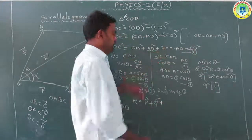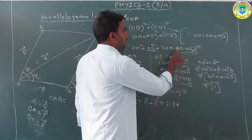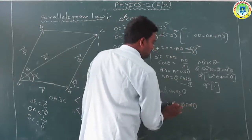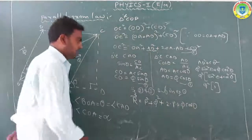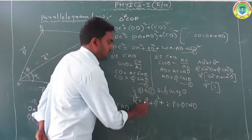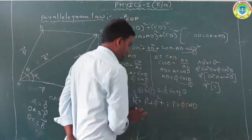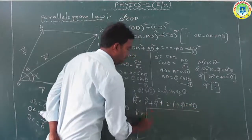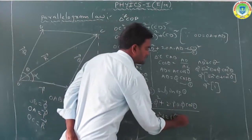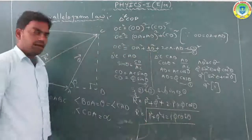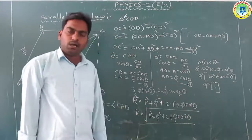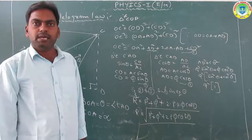Substituting into equation 1: OC² = OA² + AD² + CD² + 2·OA·AD. OA is P, AD² + CD² is Q², and 2·OA·AD = 2·P·Q cos theta. So R² = P² + Q² + 2PQ cos theta.